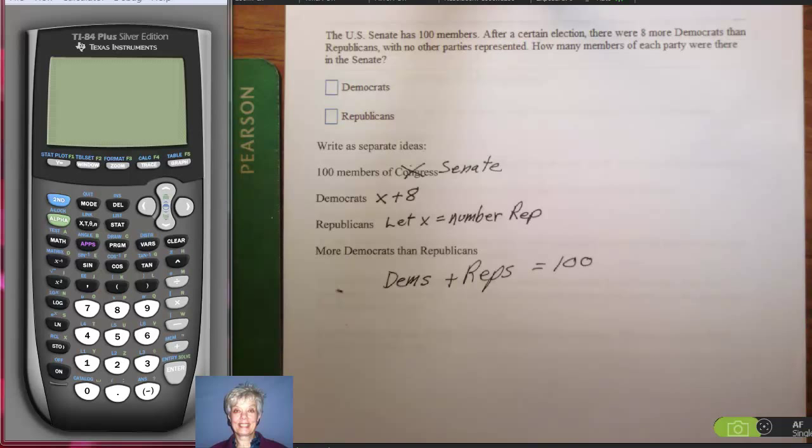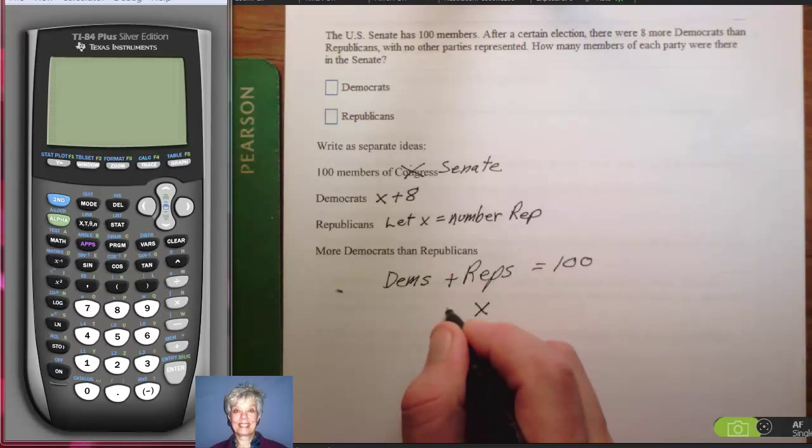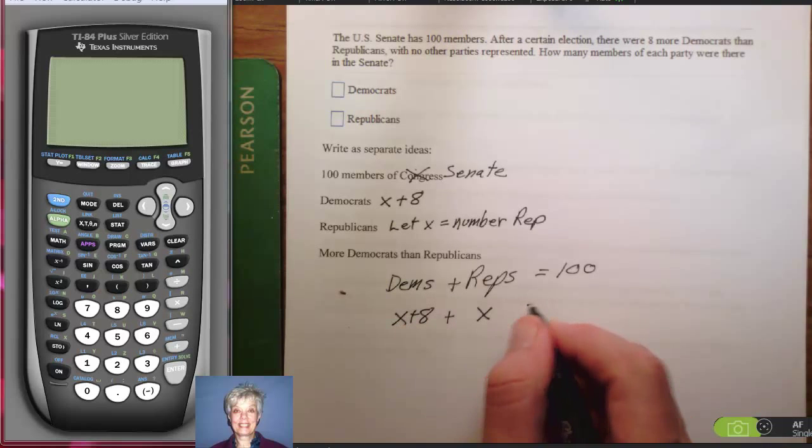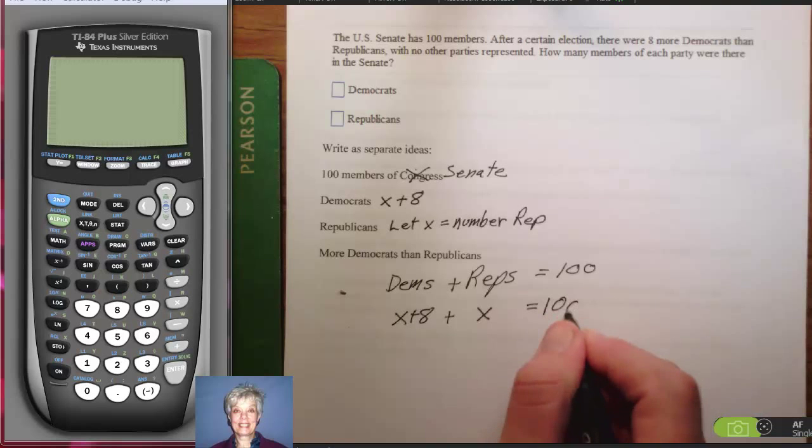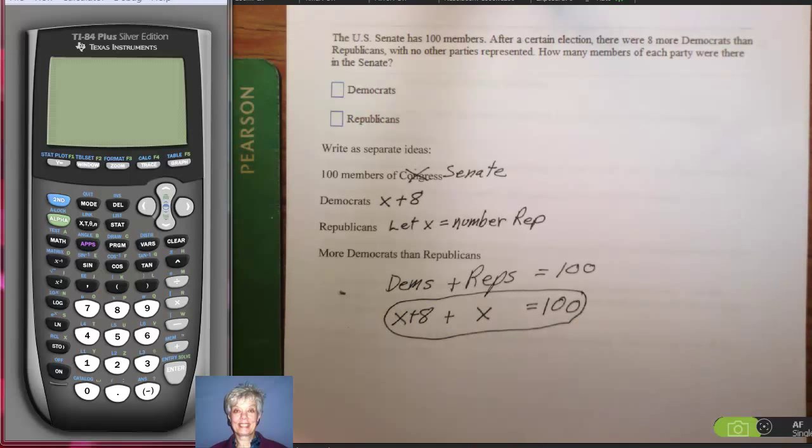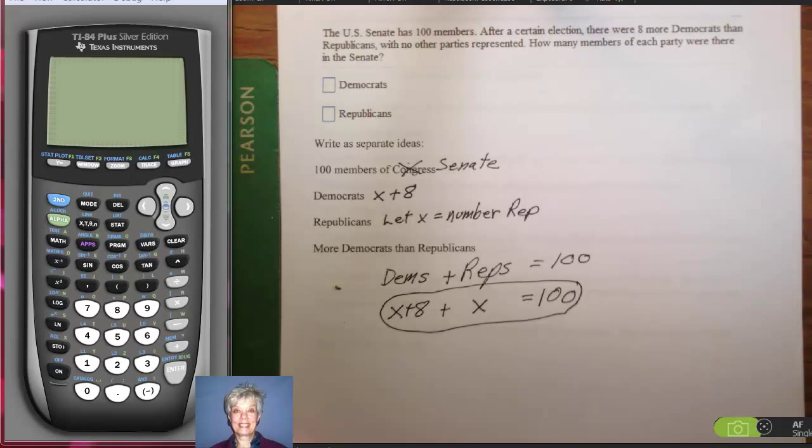Now, just substitute. We're letting X equal the number of Republicans. We're letting X plus eight equal the number of Democrats. And we know that the two add up to 100. Now, all we have to do is solve this equation, which really doesn't look like the hardest equation in the world.